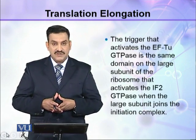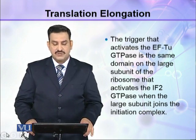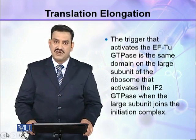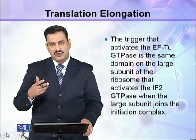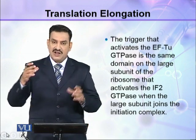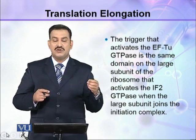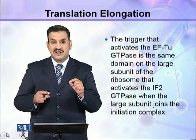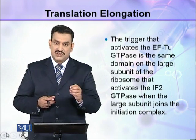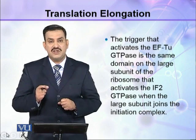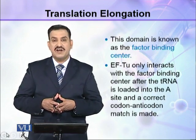The trigger that activates EF-Tu GTP hydrolysis is the same domain on the large subunit of the ribosome that activates IF2 GTP hydrolysis when the large subunit joins the initiation complex. Just as IF2 remains bound while in the GTP form and is released upon conversion to GDP, similarly EF-Tu remains associated in its GTP form and is released when it becomes EF-Tu GDP. This domain is known as the factor binding center.